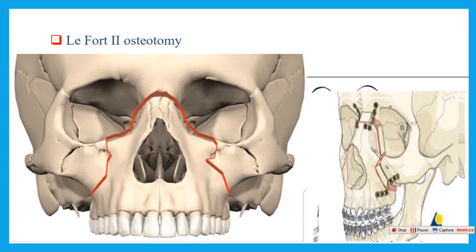The other surgical procedure is the LeFort II osteotomy. As seen in this picture, the cutting of the LeFort II osteotomy is pyramidal in shape — from the maxilla, lateral border of the nasal cavity, lateral border of the orbit, and with the ethmoid bone. This was commonly used to correct mid-facial deformity. We can move the mid-facial area in any direction and then stabilization by mini plate and screw.